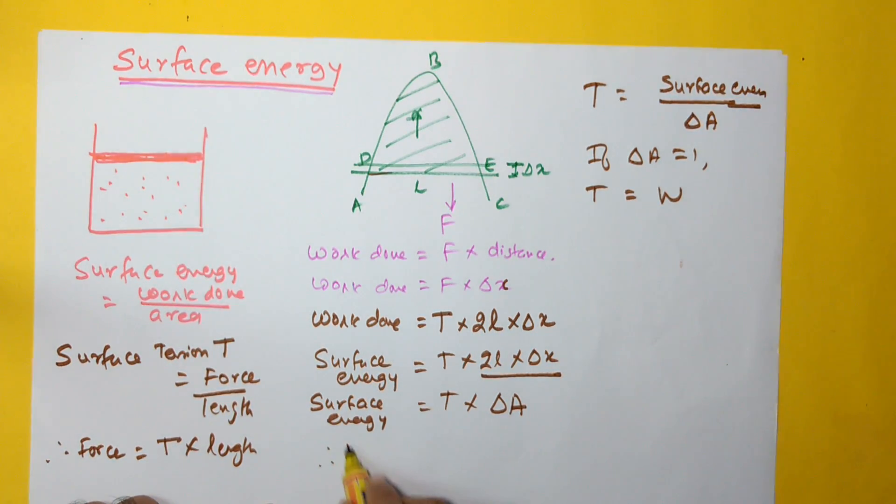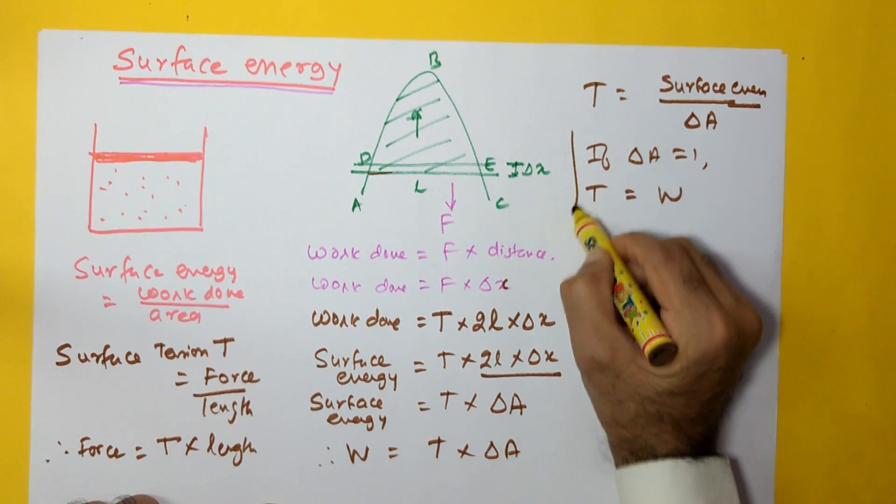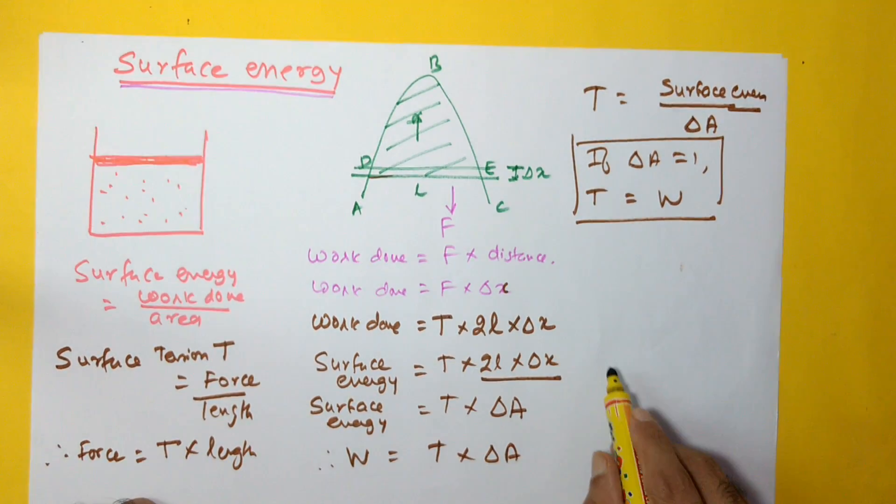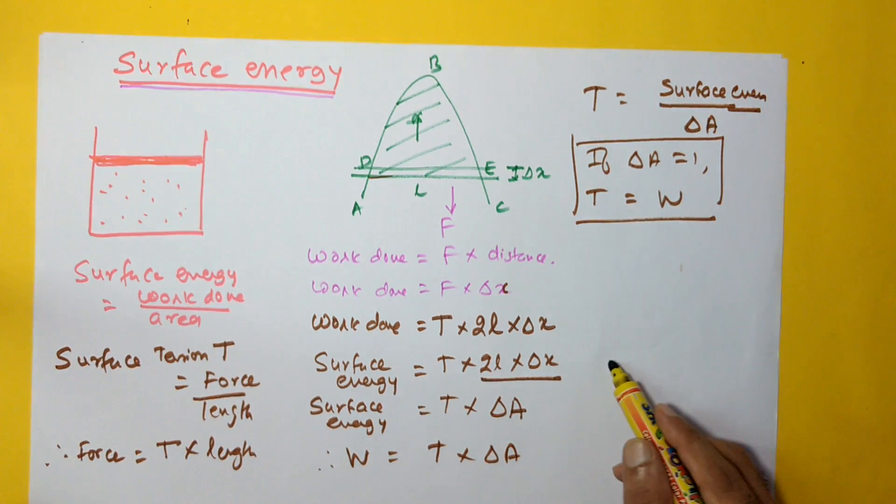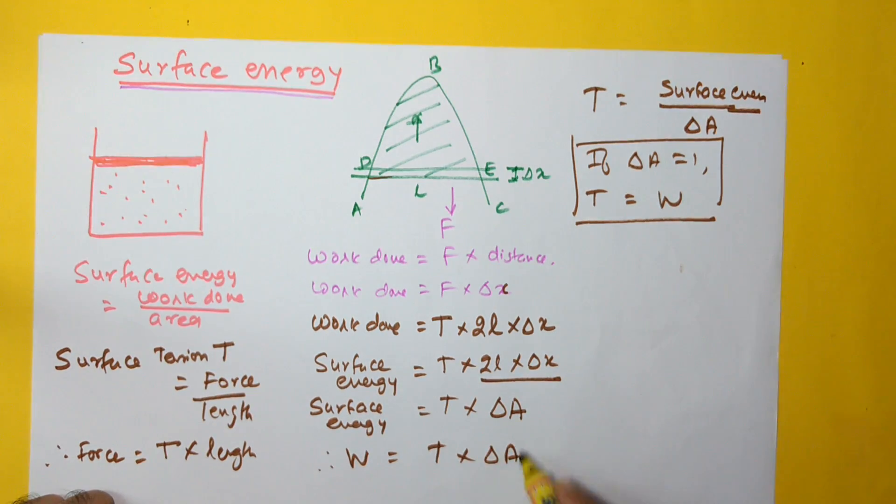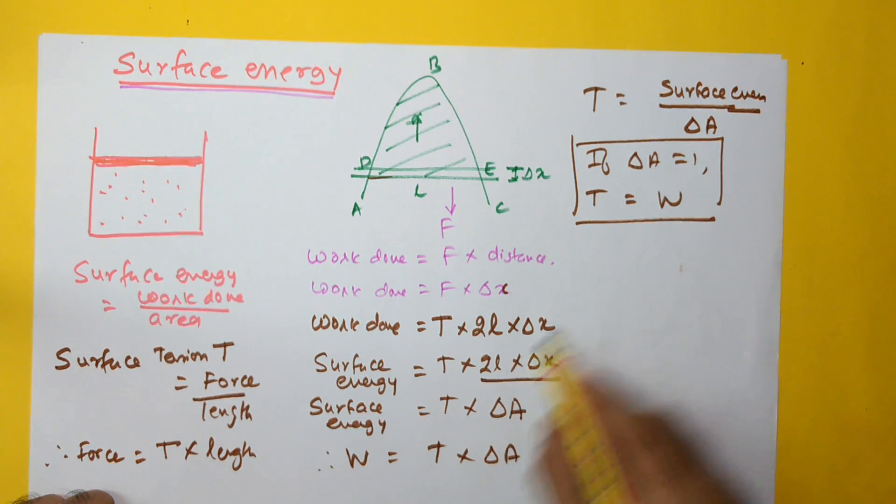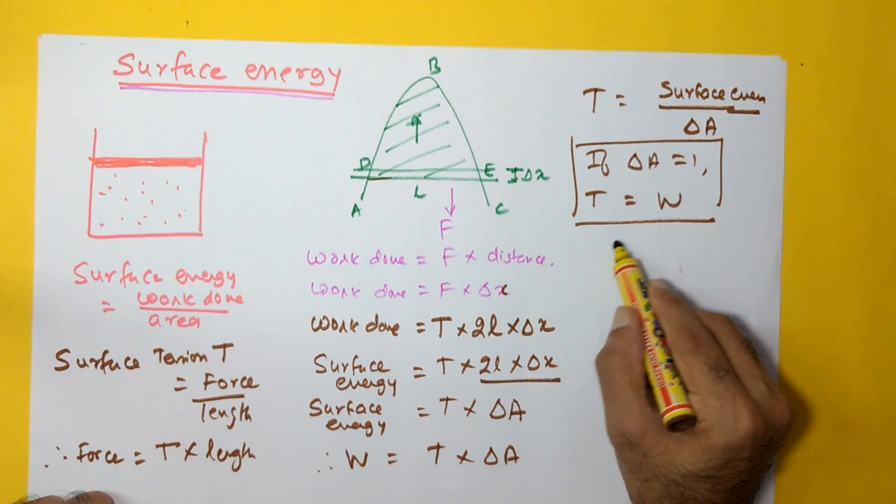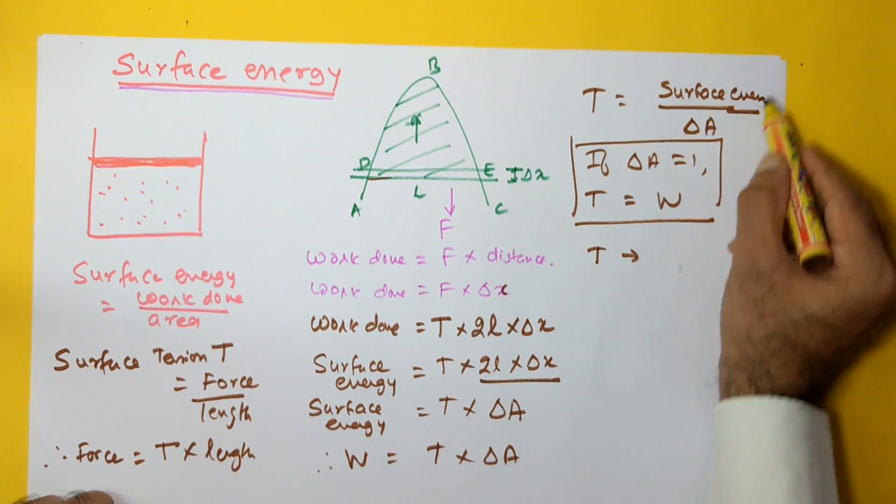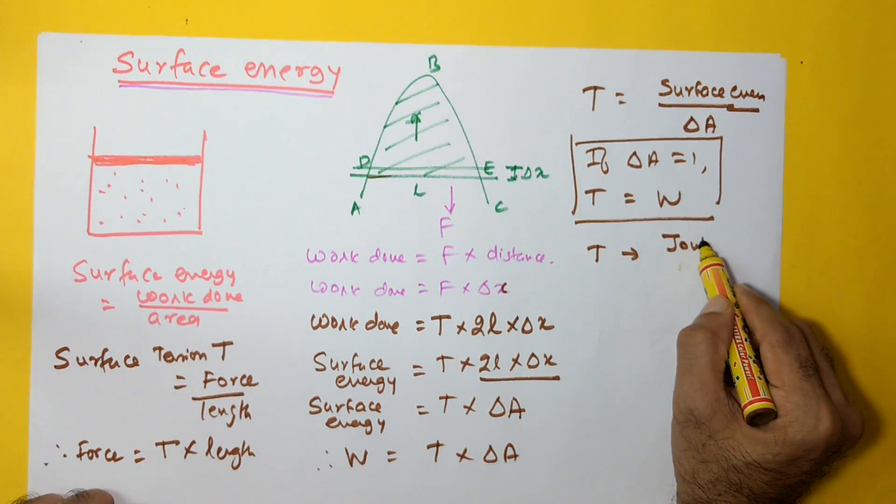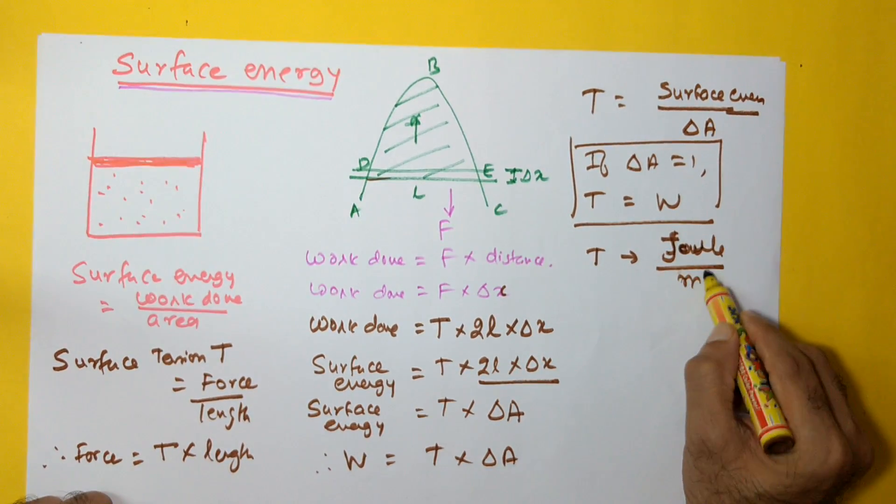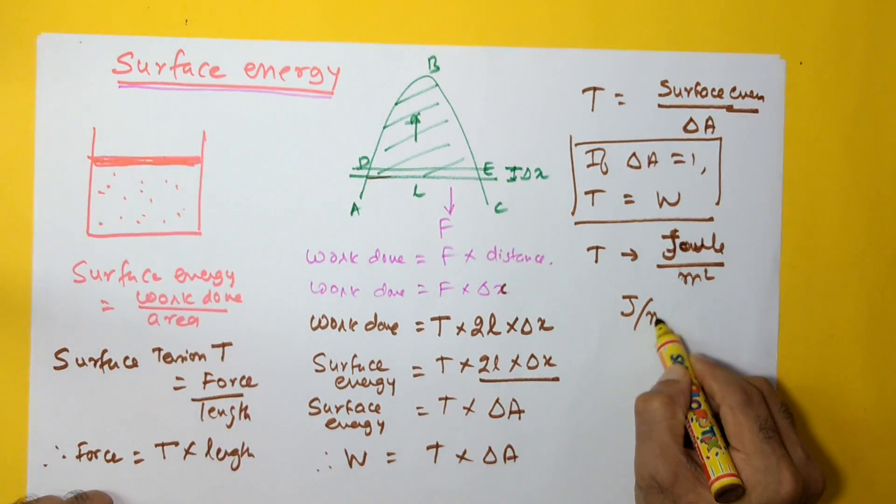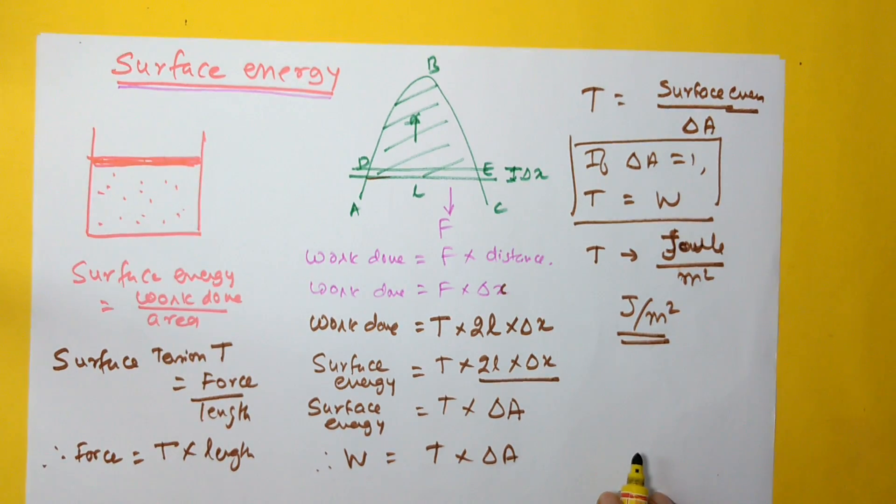So surface energy can be denoted as W equals T into delta A. This helps me define surface tension. It is the surface energy possessed by this surface when the change in area is unity. And from this, I can get a unit for surface tension. The unit of surface energy would be joule and area would be meter square. So joule per meter square is another unit of surface tension.